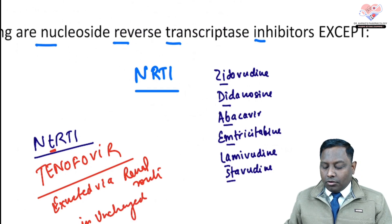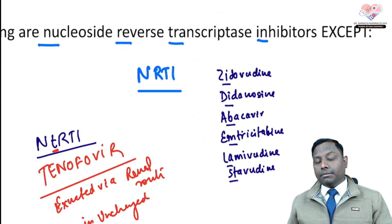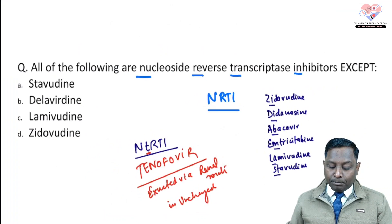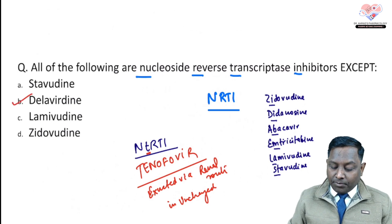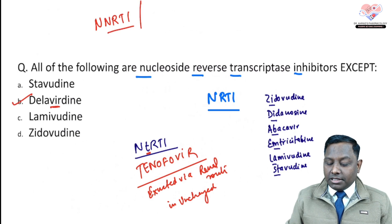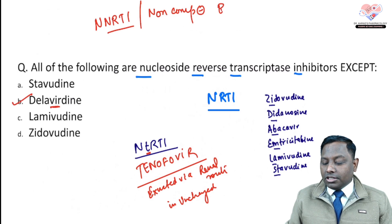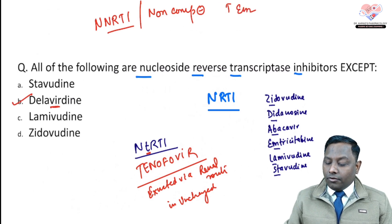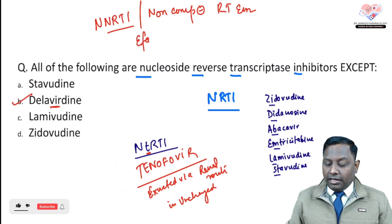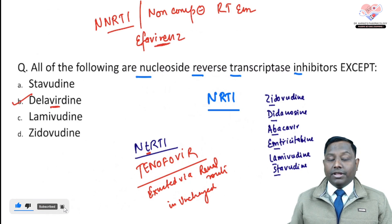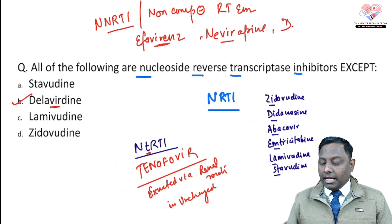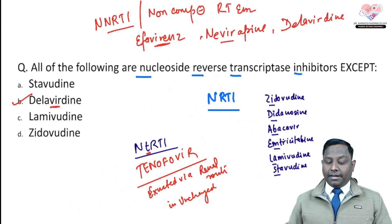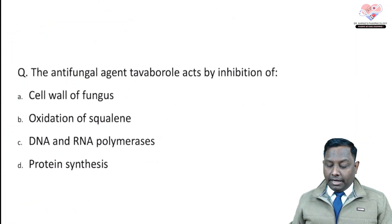In a recent exam, they asked which drug does not require dose modification — the answer is Tenofovir. Among the given choices — Stavudine, Lamivudine, Zidovudine are all NRTIs — Delavirdine is NOT an NRTI. Delavirdine is an NNRTI — Non-Nucleoside Reverse Transcriptase Inhibitor — a non-competitive inhibitor of the reverse transcriptase enzyme. Other NNRTIs include Efavirenz and Nevirapine. These are all first-generation NNRTIs.